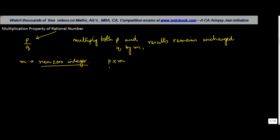What does this mean? If you actually multiply p by m in the numerator and you multiply q by m in the denominator, the result—let's call it r—will remain the same.